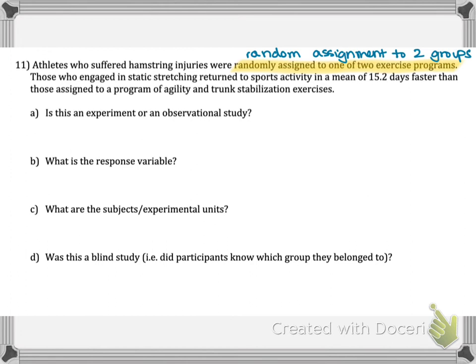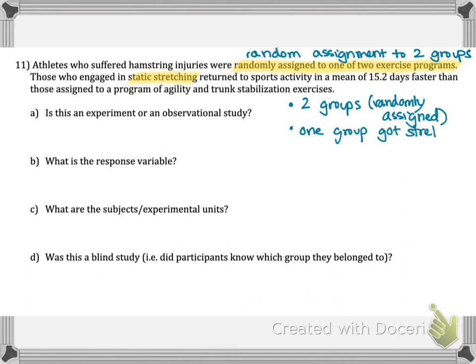So we want to take a look at what the treatment is here. If one group is doing trunk stabilization exercises, I'm going to consider the treatment the static stretching — the stretching that occurred in one group but not the other. So we have two groups, randomly assigned, and one group got the stretching while the other group does not receive the stretching. Based on this information, the stretching is the treatment.